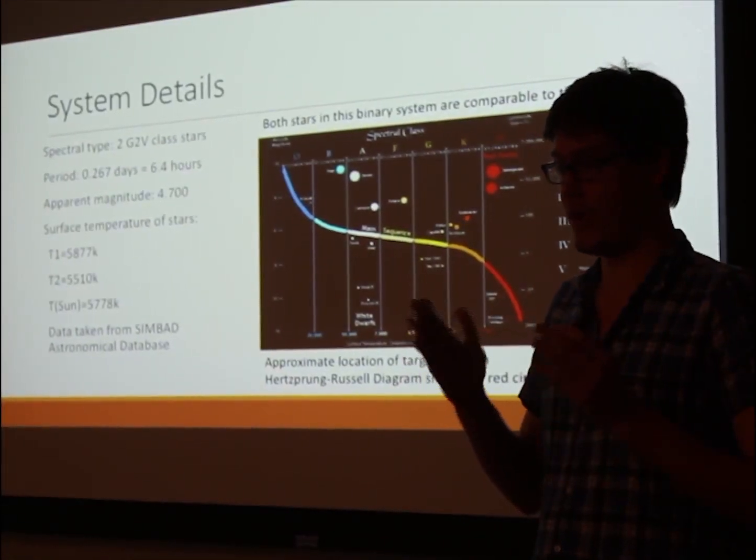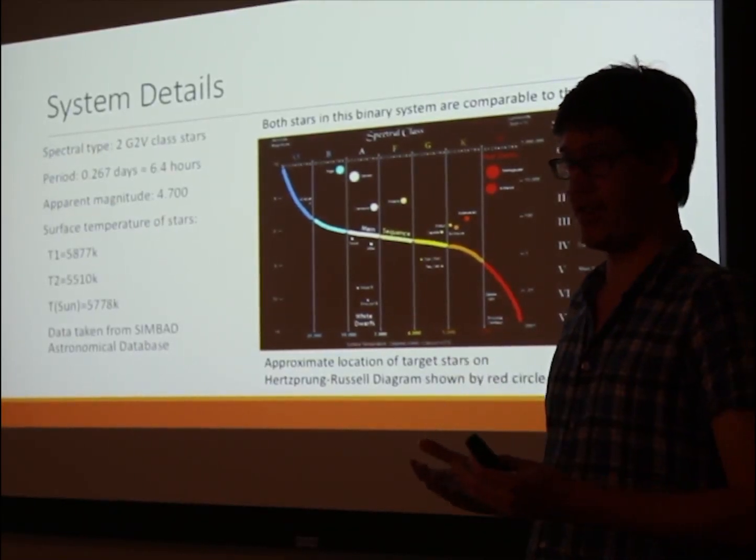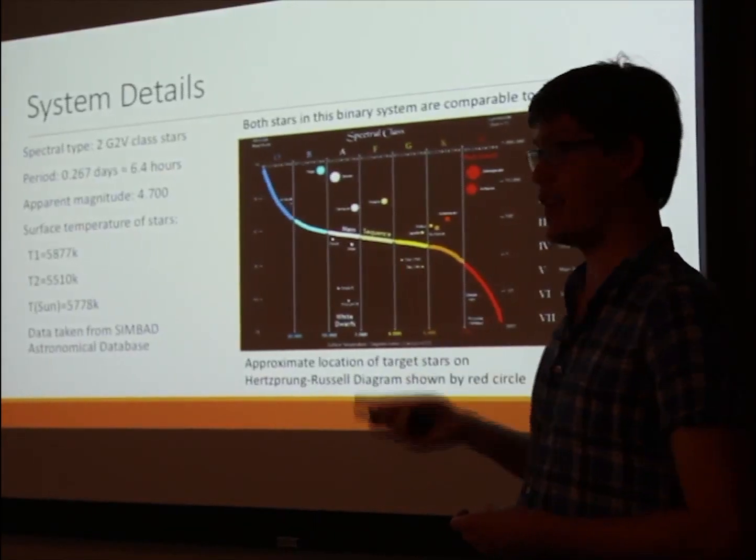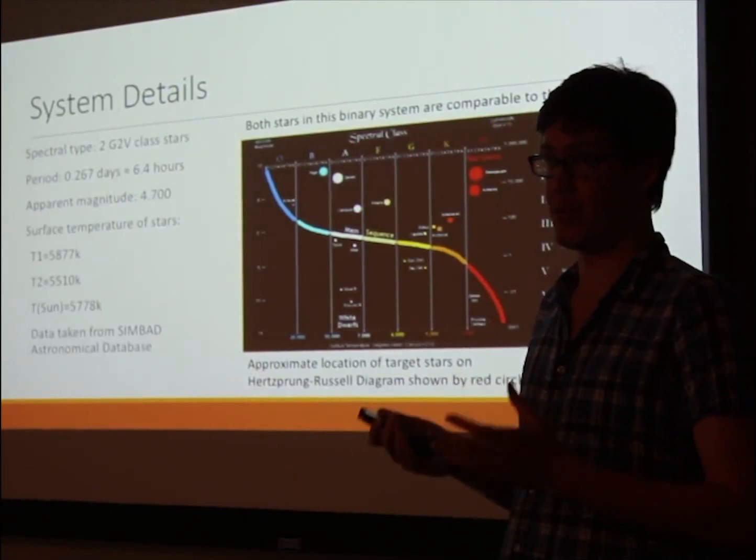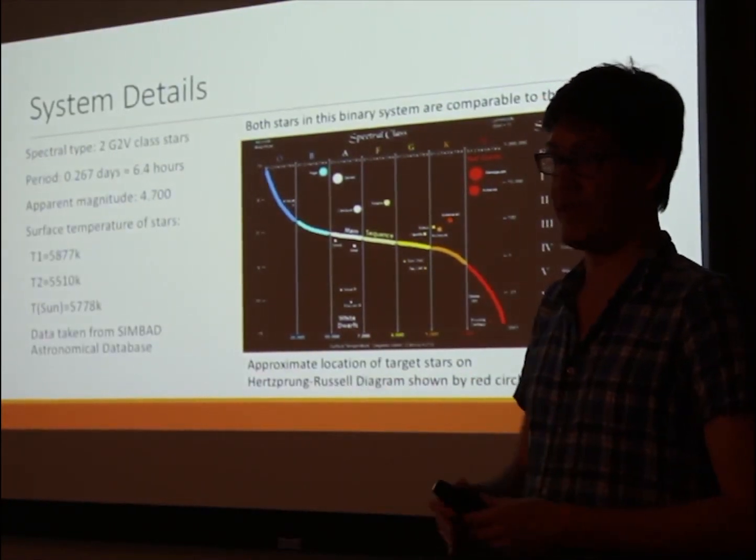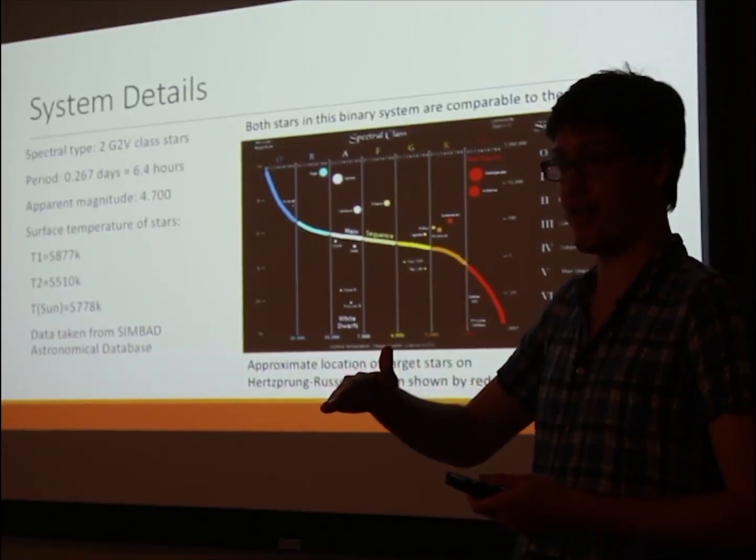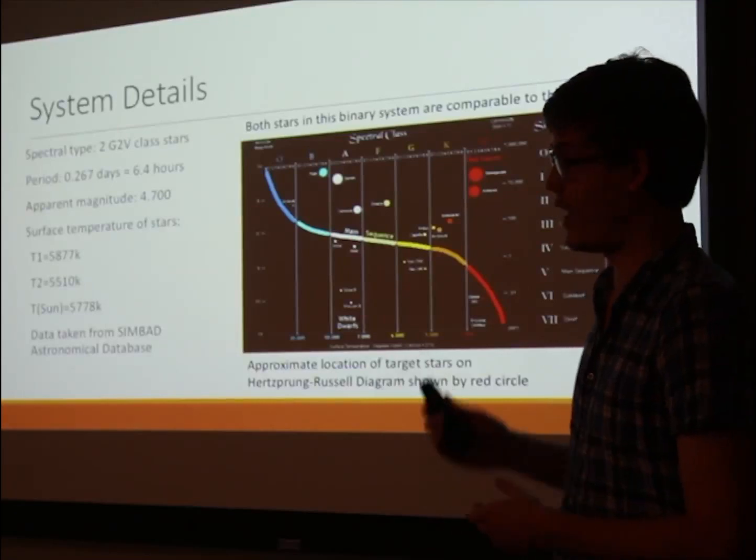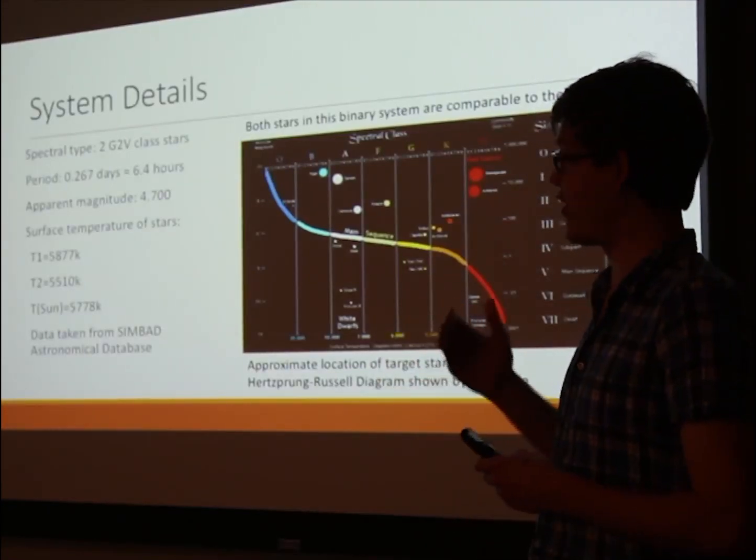The periods of these stars are also very short, allowing you to observe a large portion of the period of the star over one observational period. For example, this star system has a period of 0.267 days, which is about 6.4 hours. So if you're at the observatory for a night of observing, you can see most of the change in the brightness of the star in that one night, which is very useful for doing research.